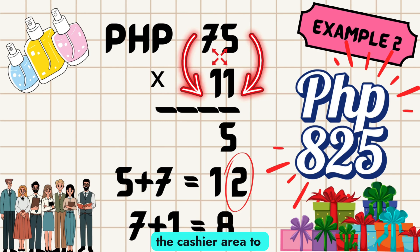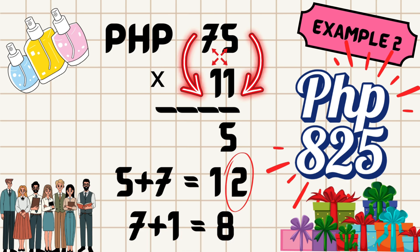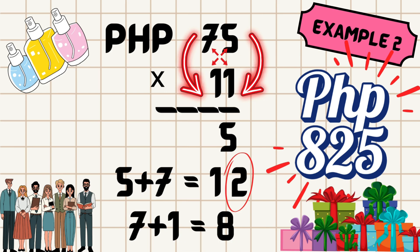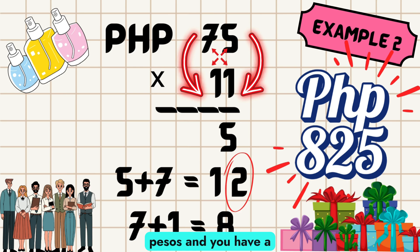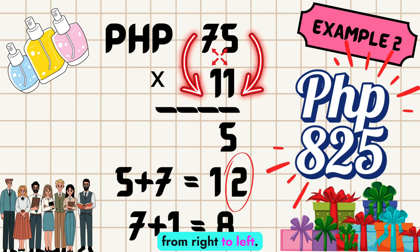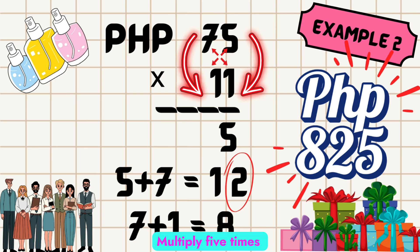You're on your way to the cashier area to pay for the Christmas presents when you find a good perfume you'd like to give to your subject teachers. The perfume costs 75 pesos and you have a total of 11 subject teachers. Following our technique, let's start from right to left: multiply 5 times 1, which equals 5.